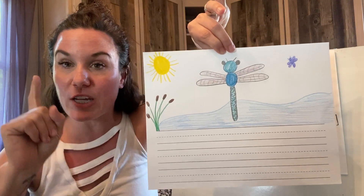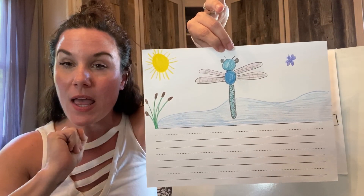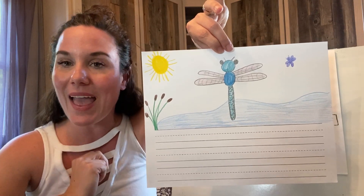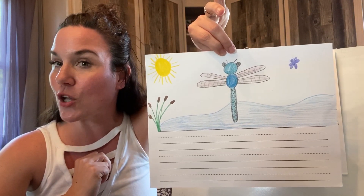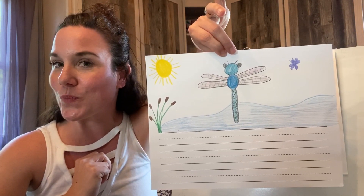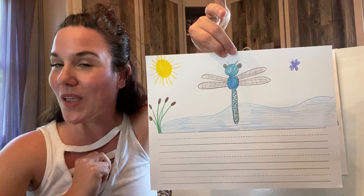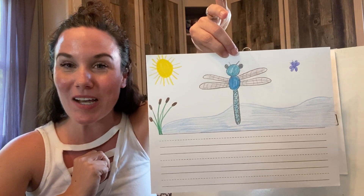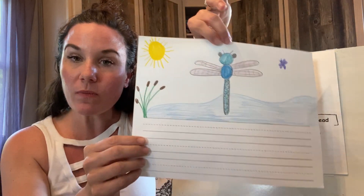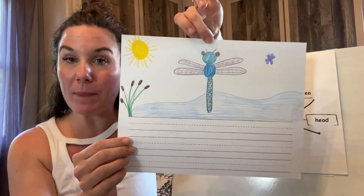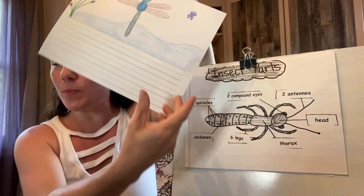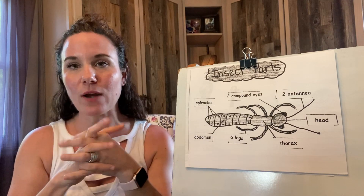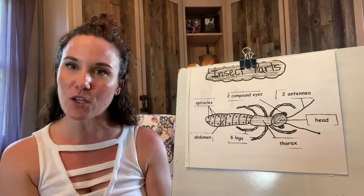That's number one, I need you to get your journal. Number two, I need you to get a pencil and an eraser. Go. Okay, are you back? So you have your journal and your pencil and your eraser. Set that down in ready position and look at me.